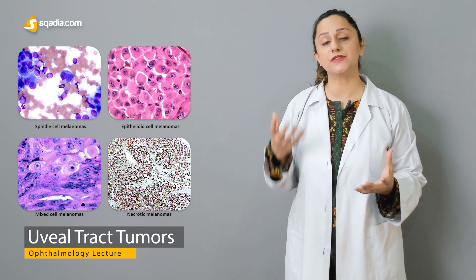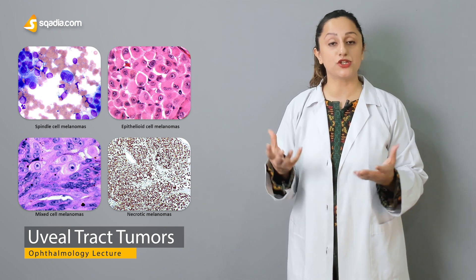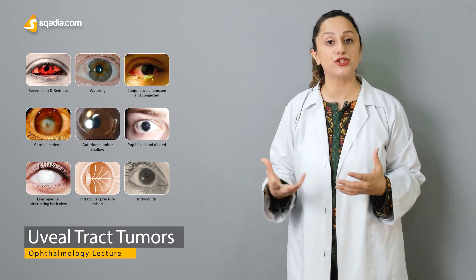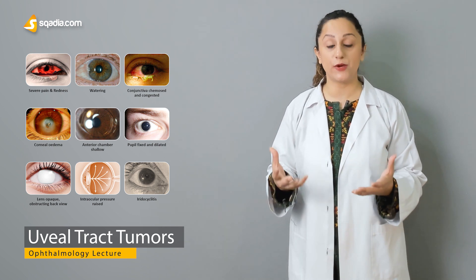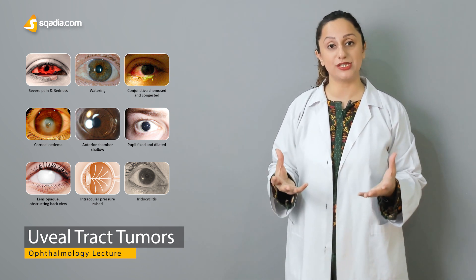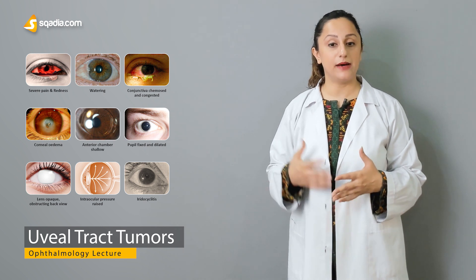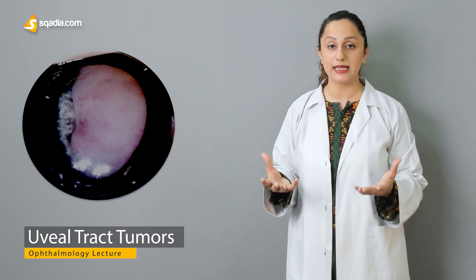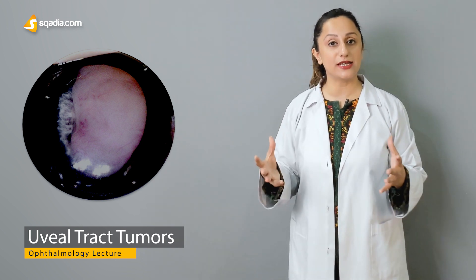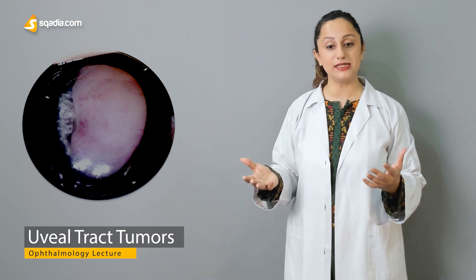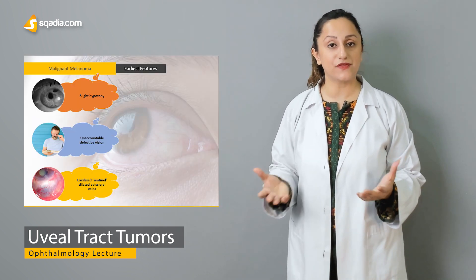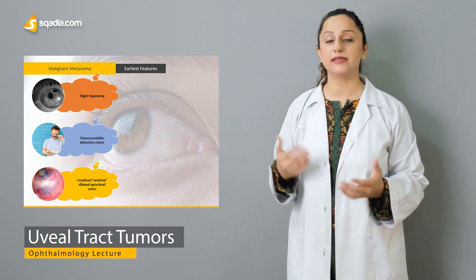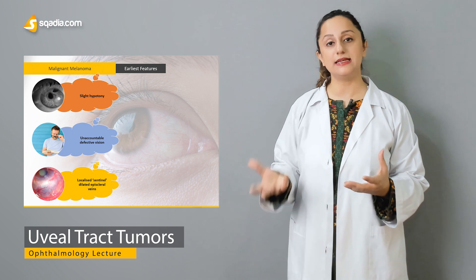The malignant conditions are notoriously known as melanomas in the choroid. The definitive diagnosis is dependent upon the fundoscopic picture, and we'll discuss the peculiar features to look for as a clinician when diagnosing melanomas. Then we'll discuss the tumorous conditions of the ciliary body, grouped into benign and malignant conditions — primarily hyperplasia, benign cystic lesions, and medullary epitheliomas, with melanomas as the malignancy.